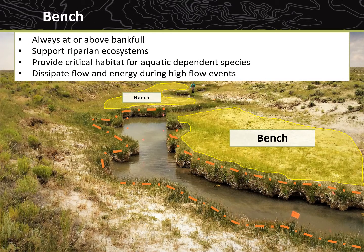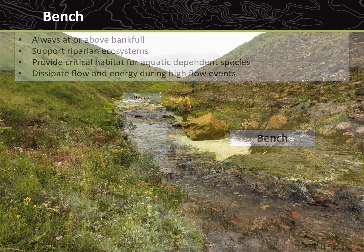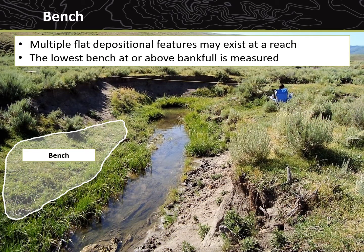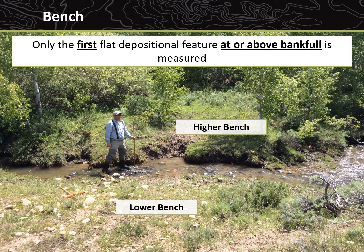The active bench is a relatively flat depositional surface adjacent to a stream or river that is formed by periodic flooding. Benches are important because they support riparian ecosystems, provide critical habitat for aquatic dependent species, and dissipate flow and energy during high flow events. Benches are always located at or above the height of bankfull. Some streams will naturally lack a bench, specifically streams in V-shaped valleys which do not have the potential for developing a bench. Multiple flat depositional features may exist at a reach; only the first flat depositional feature at or above bankfull is measured, regardless of whether it is an active or inactive bench. If bench height differs on either side of the stream, only the lower of the two features is measured, because the lower surface will be inundated first during a flood event.